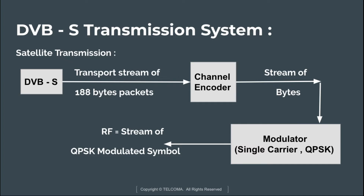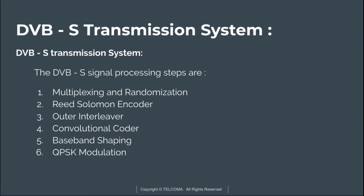Next is the DVB-S satellite transmission. In this diagram you can see a DVB-S system that transmits a transport stream of 188-byte packets. These 188-byte packets pass through the channel encoder and are converted into a stream of bytes, which then pass through the modulator at a single-carrier QPSK, converting the bytes into a stream of QPSK modulated signals that are transmitted over the network.